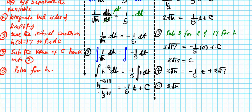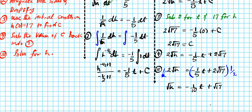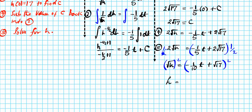Step five: get h isolated. We have 2√H = negative 1/5 · t + 2√17. Divide both sides by 2 — or multiply by 1/2. Distributing 1/2 to both terms: √H = negative 1/10 · t + √17. The last step is to undo the square root using its inverse — squaring both sides: H = (negative 1/10 · t + √17)². Don't forget to box your answer so it's easier for a grader to identify your final result.